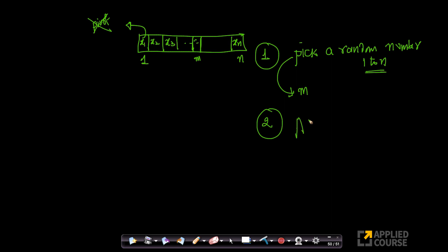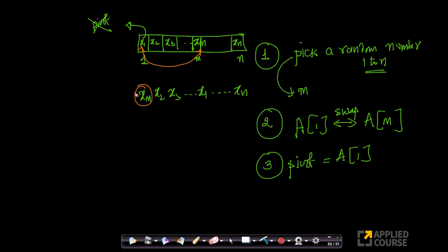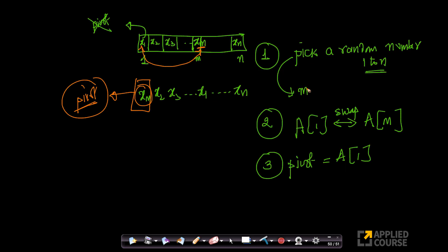I will swap a[1] with a[m]. Now I will make my pivot equal to a[1]. So what did I exactly do? I took element xm, I swapped x1 and xm — so what was at position m is now at position 1, and x1 is at position m. I pick this first element as my pivot. That's it. This is the only change I make before I start quicksort.